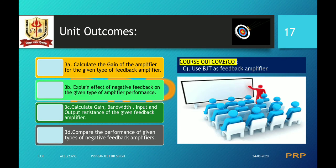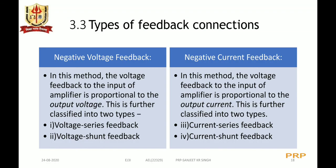Unit outcomes: the learner must have the ability to calculate the gain of the amplifier, explain the effect of negative feedback on the given type of amplifier performance, calculate the gain, bandwidth, input and output resistance of the given feedback amplifier, and compare the performance of the given type of negative feedback amplifiers. The course outcome is to use BJT as a feedback amplifier.